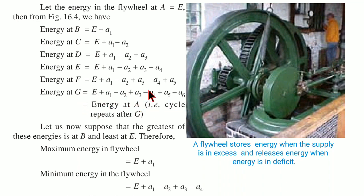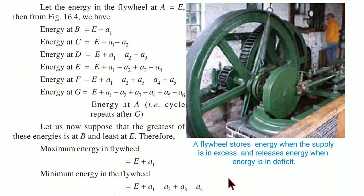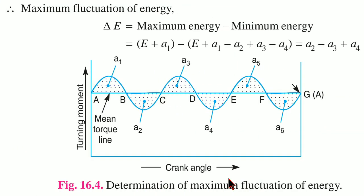The energy at G equals the energy at A, meaning the cycle repeats after G. Suppose that the greatest of these energies is at B and the least is at E. Therefore, maximum energy in the flywheel is at point B, which is E plus A1, and minimum energy in the flywheel is at point E, which is E plus A1 minus A2 plus A3 minus A4. See figure 16.4, determination of maximum fluctuation of energy.